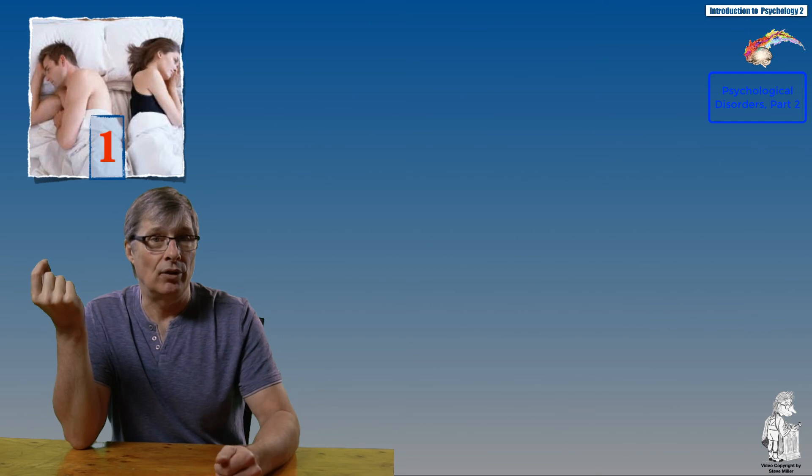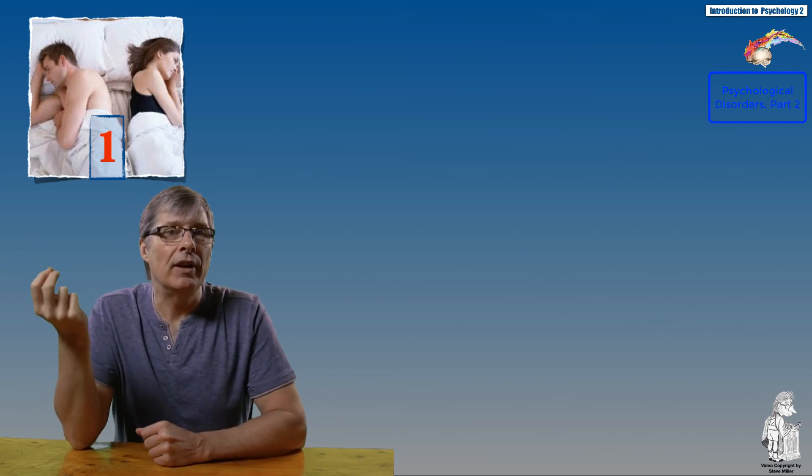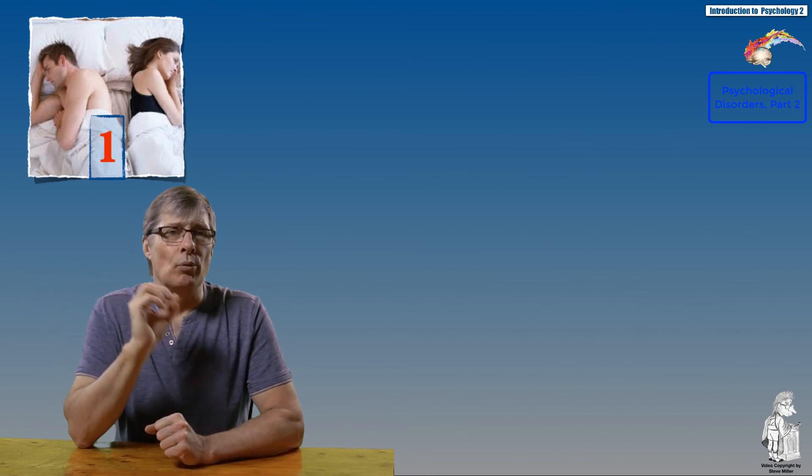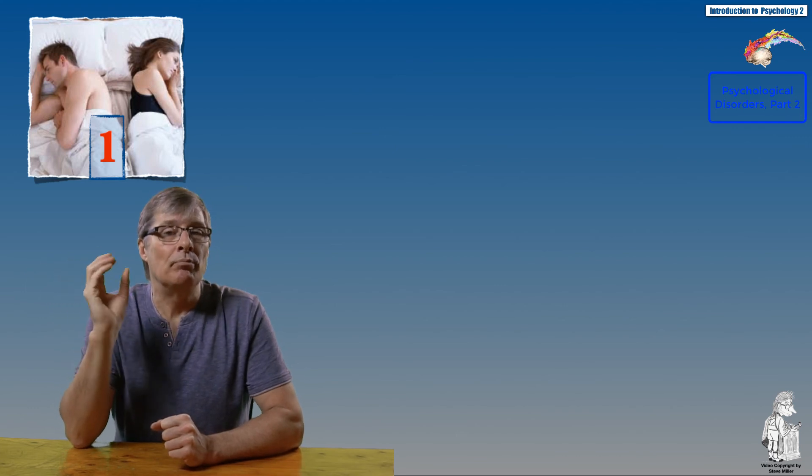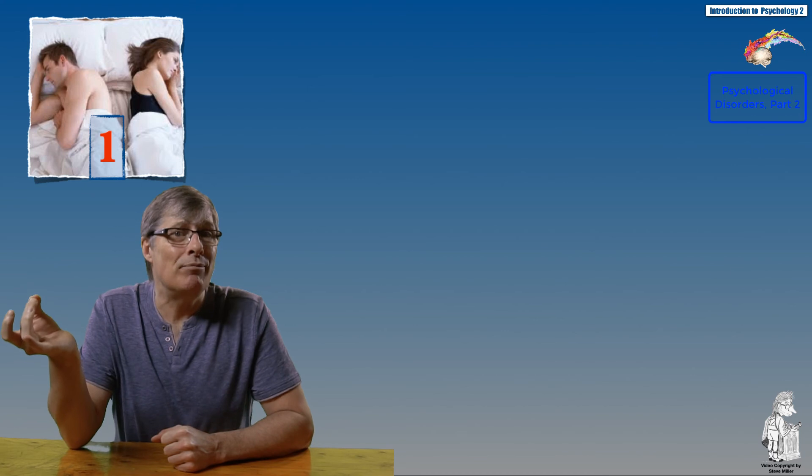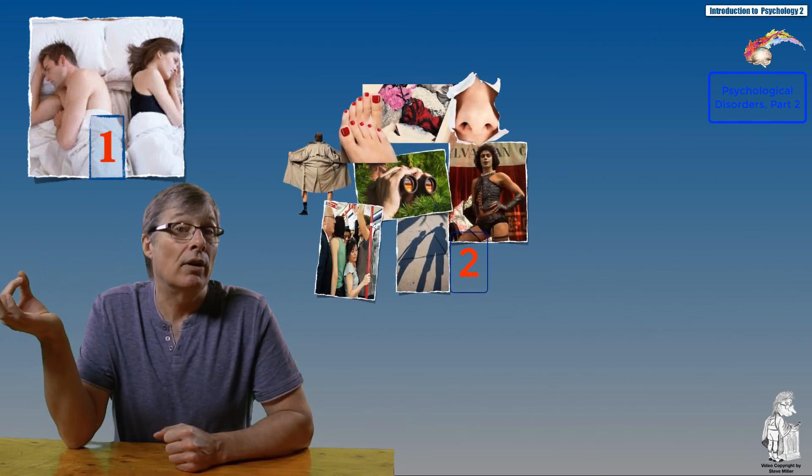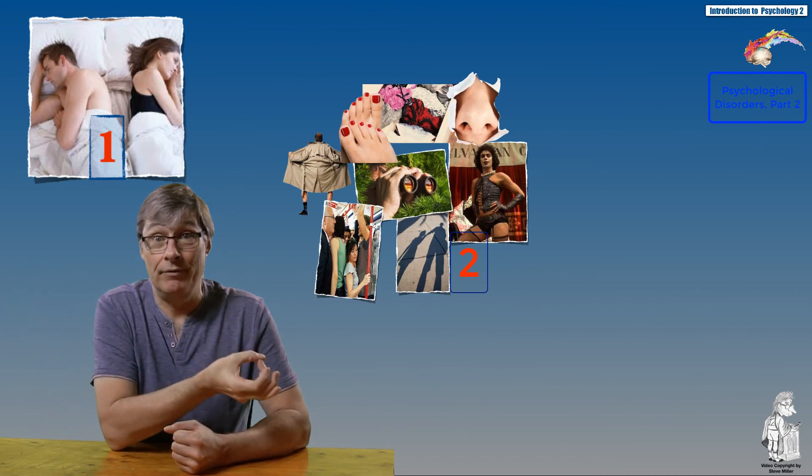The second type are paraphilic disorders. Paraphilias are recurrent sexual urges or fantasies or behaviors involving children, other non-consenting partners, non-human objects, or suffering or humiliation. In this category you'll go anywhere from pedophilia to having fetishes around shoes or latex and rubber, or around sadomasochism.